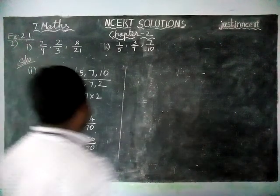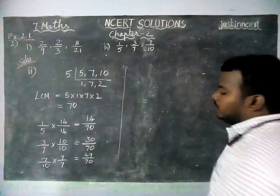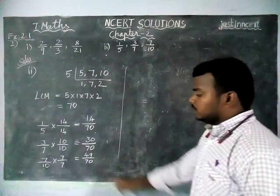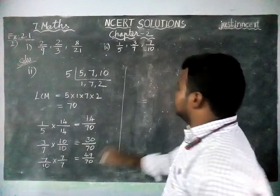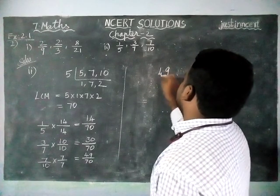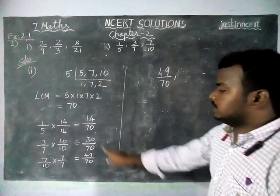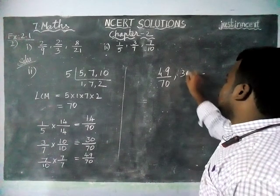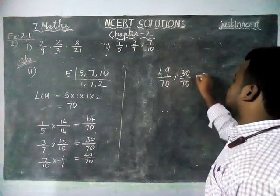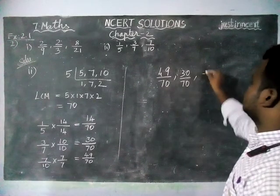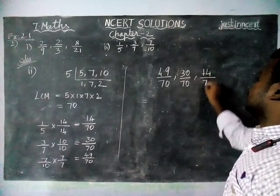The same thing, now denominators are same. We converted into like fractions. We are going to find the greatest number. Here, greatest number is 49 divided by 70, next greatest number is 30 divided by 70, and then smallest number is 14 divided by 70.